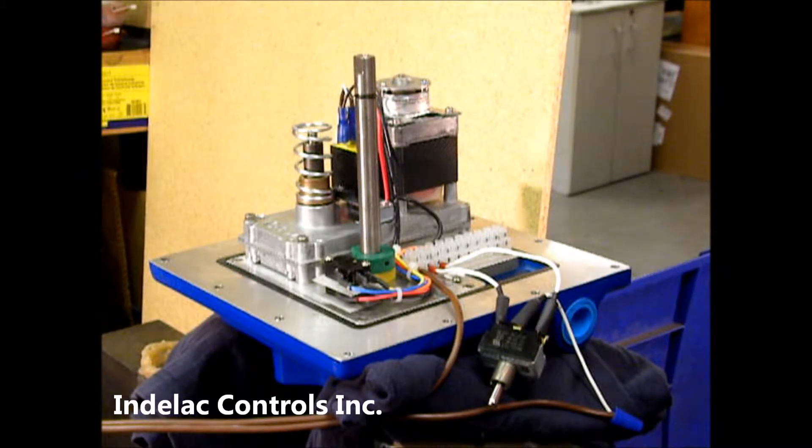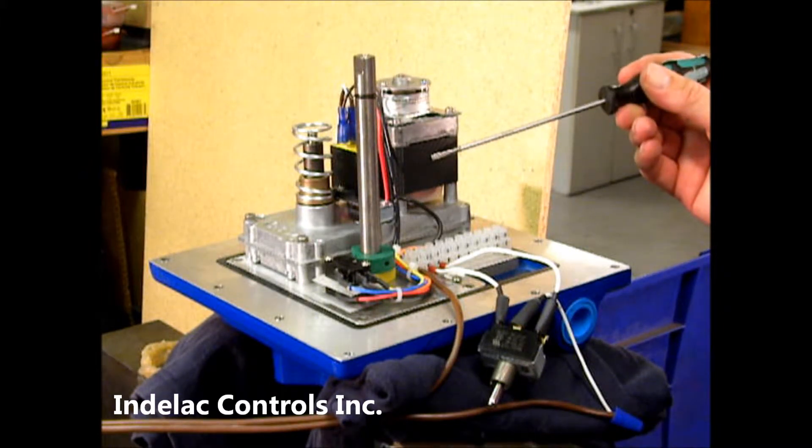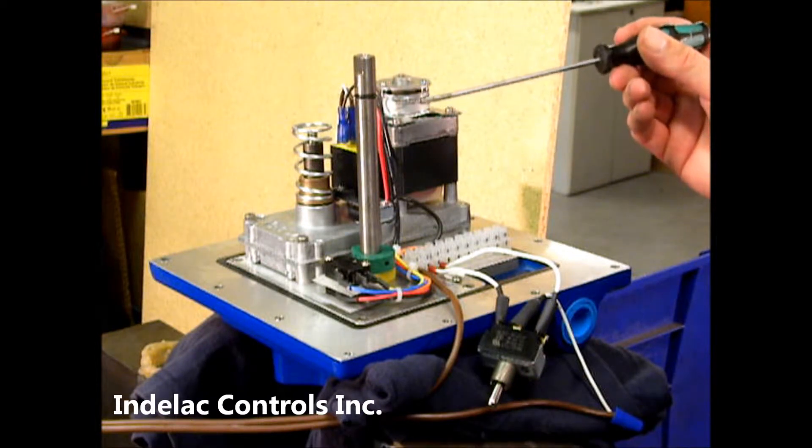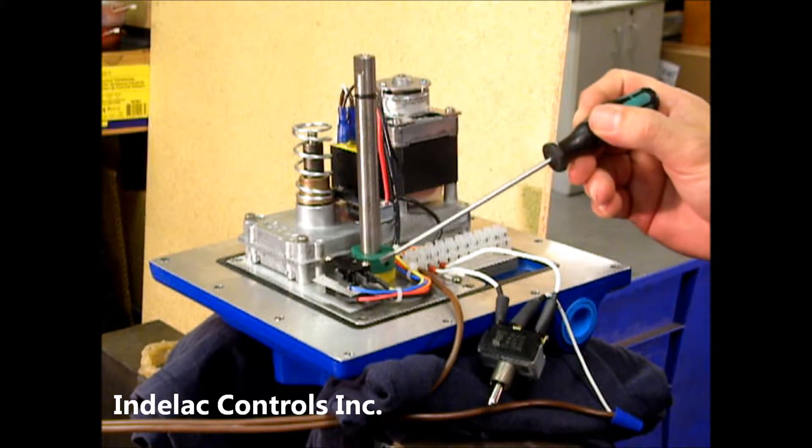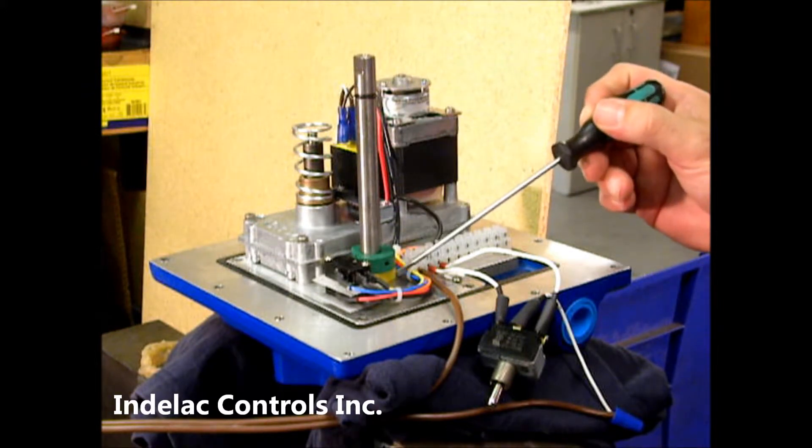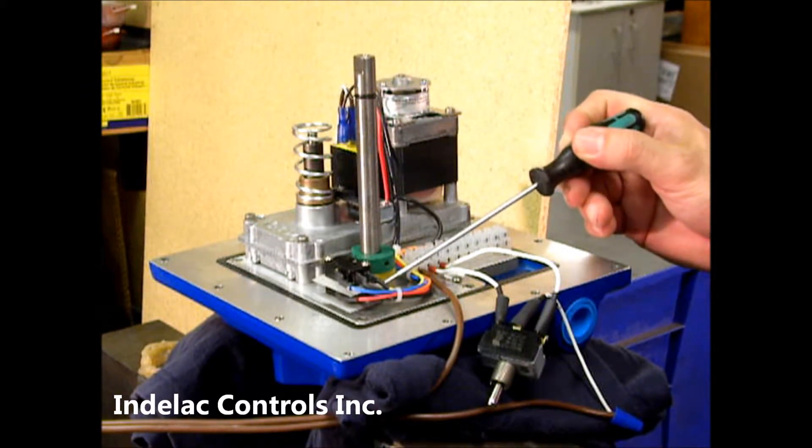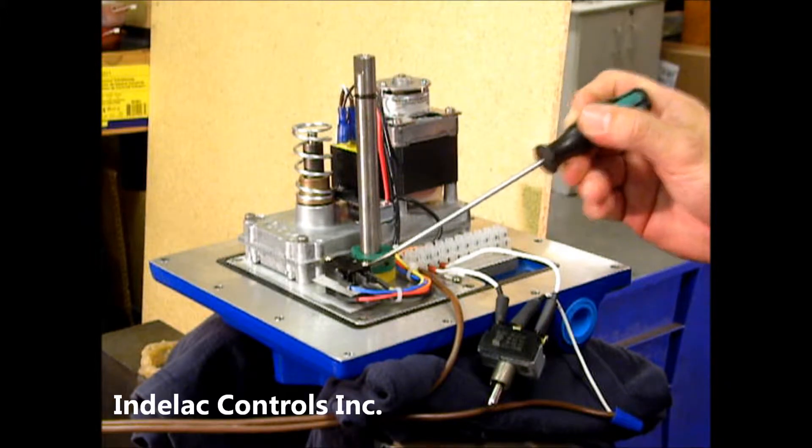This is a simple unit that has the 120-volt motor, a brake, a power start capacitor, and then we also have our two limit switches, the close on the bottom and the open on the top.